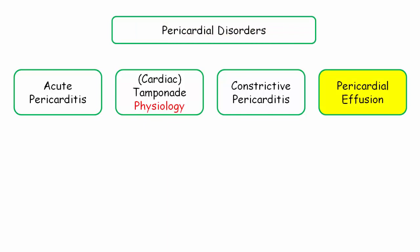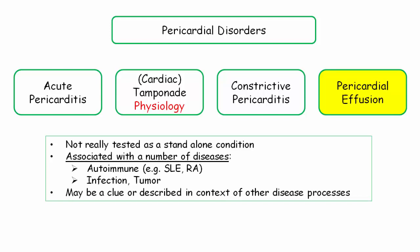I want to dispense with pericardial effusion straight away. The NBME does not find the presence of an effusion, by itself, sexy enough for test material. Rather, it is subsumed under other disease headings, such as pericarditis or tamponade. So just to be clear, pericardial effusions are not really tested as a standalone condition. They are associated with a number of disease processes, such as autoimmune disorders, but won't be a target of inquiry if mentioned.